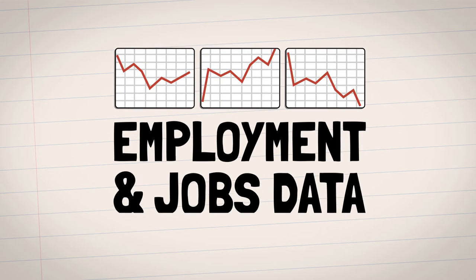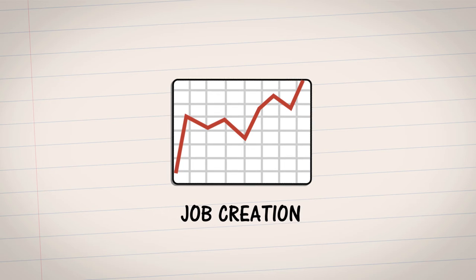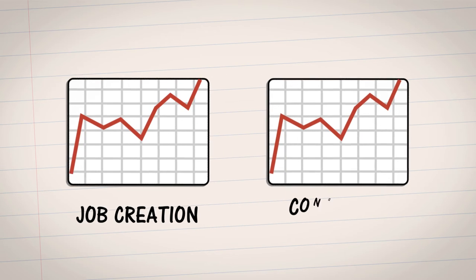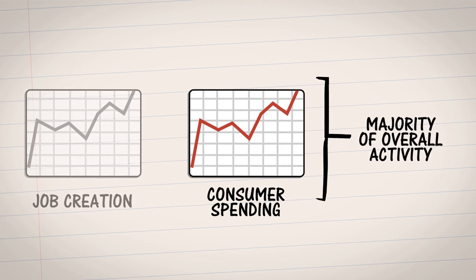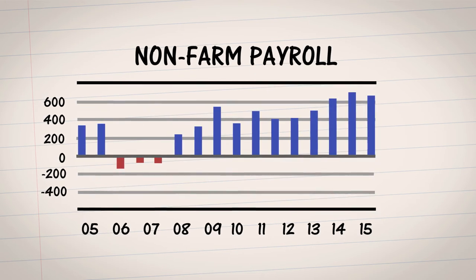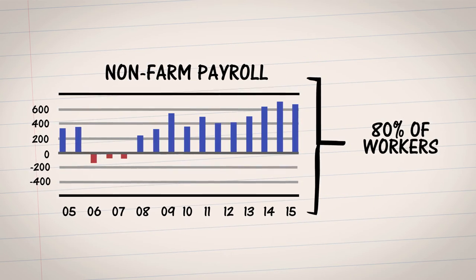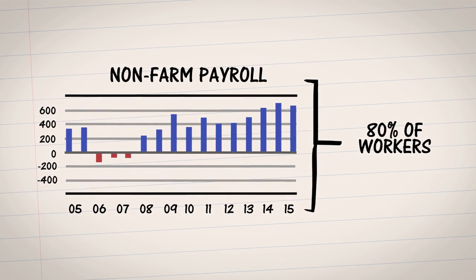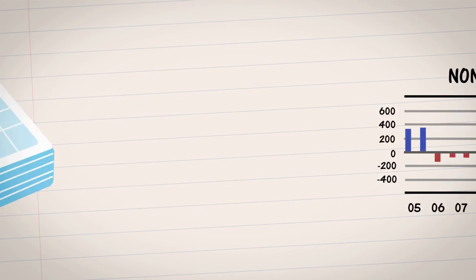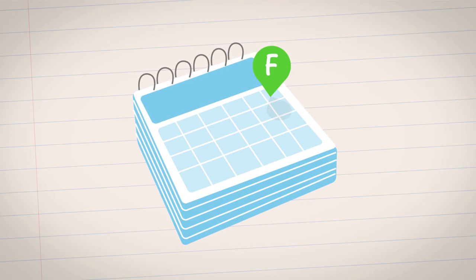Next, employment and jobs data. This data is very important because job creation is a leading indicator of consumer spending, which accounts for a majority of overall economic activity. The most important figure is the non-farm payroll, which accounts for approximately 80% of the workers who produce the entire gross domestic product of the United States. This vital piece of economic data is released monthly, usually on the first Friday after the month ends.